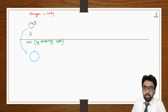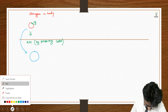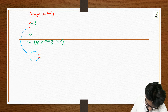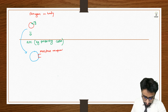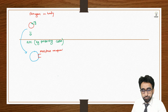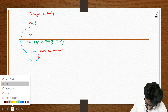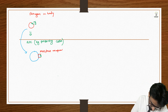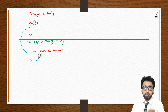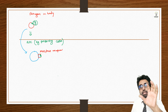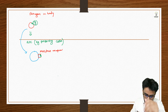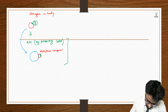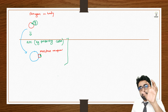The antigen presenting cells have specific receptors on their surface called MHC or HLA. The pathogen's antigenic part attaches to this MHC on the surface of the antigen presenting cell and gets exposed on it.